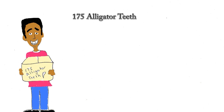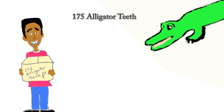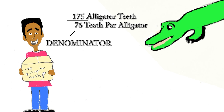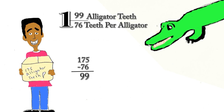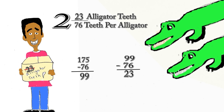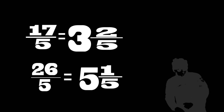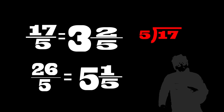I've got 175 teeth for an alligator — how many can I make? An average alligator could have 76 teeth. That's my denominator.